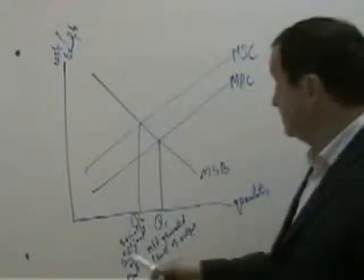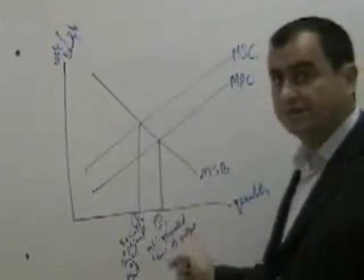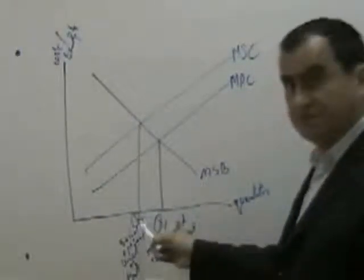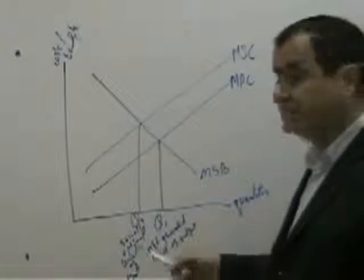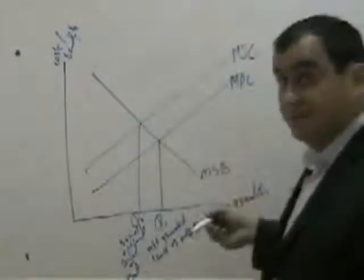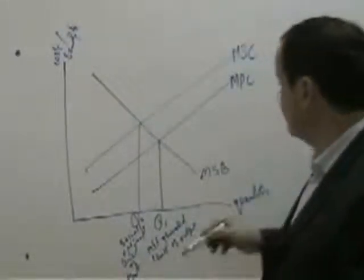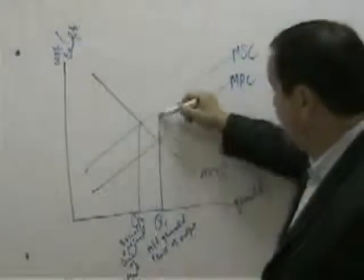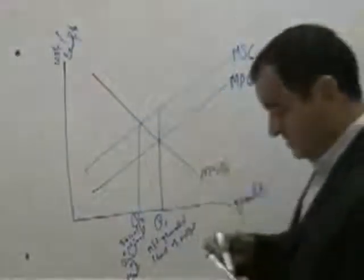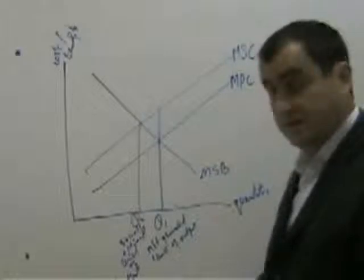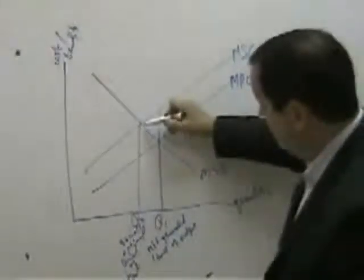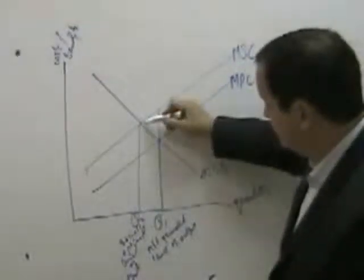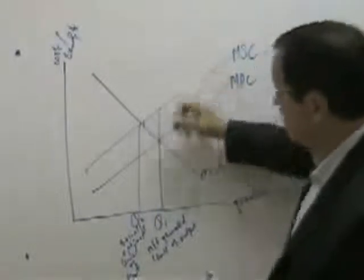But we have market failure because the market gives us Q1, too much. Every unit between Q2 and Q1 generates more cost than benefit, and we can see that on a diagram by looking at this area, which is the summation of all of these units of output's cost exceeding benefit.